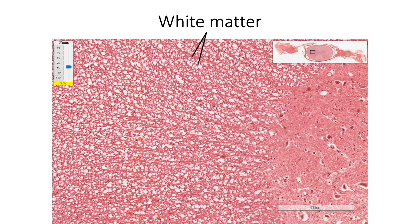Here we are seeing the peripheral white matter showing sections of variably myelinated axons of both ascending and descending tracts, interspersed with nuclei of neuroglial cells.